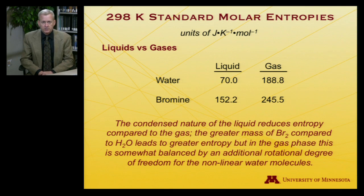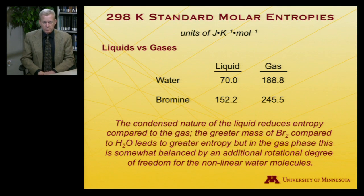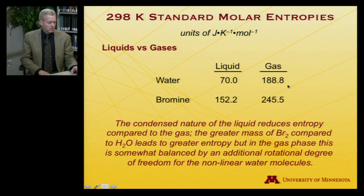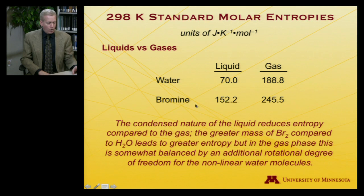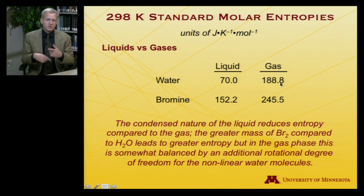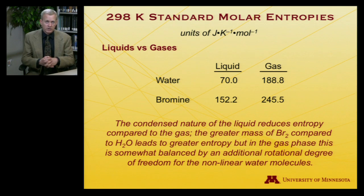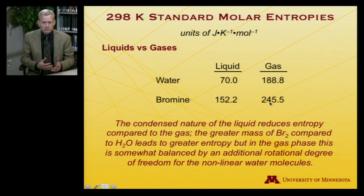The expression for entropy involves mass in the numerator of a logarithm, so as mass goes up, entropy goes up. In the gas phase, the difference between water and bromine grows a little smaller — roughly 82 versus 57 joules per Kelvin per mole difference — because water is a nonlinear molecule, unlike bromine, and so it has an additional rotational degree of freedom. Rotations can contribute significantly to entropy, and that's not available to the linear bromine molecule.